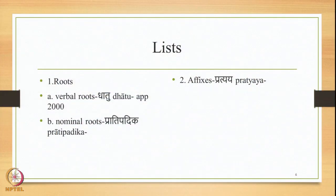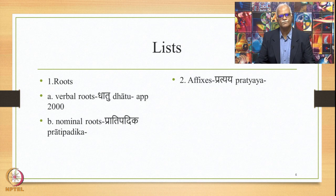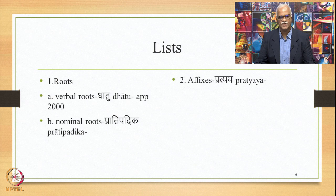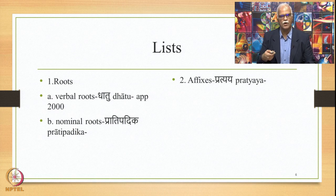The lists are of two types: roots list and affixes list. The roots have two types of lists: one, the list of verbal roots — dhatus — approximately 2,000; and a list of nominal roots — pratipadikas — these are innumerable. The second list is that of affixes or pratyayas, which are finite in number. These two lists form the base of this grammar to operate on.